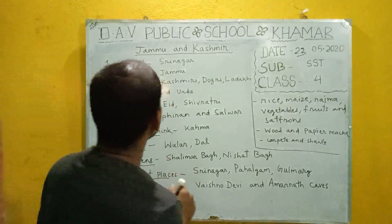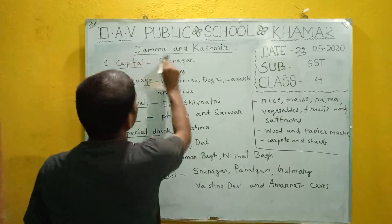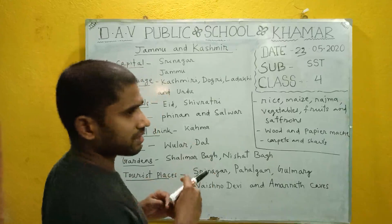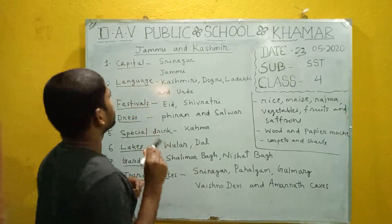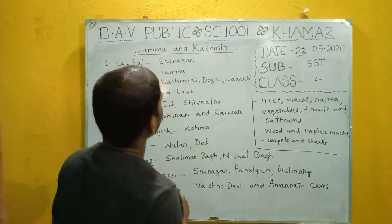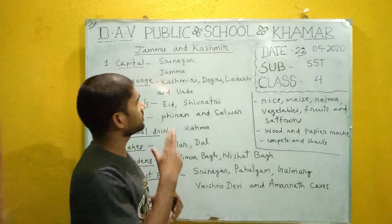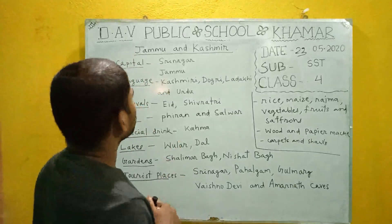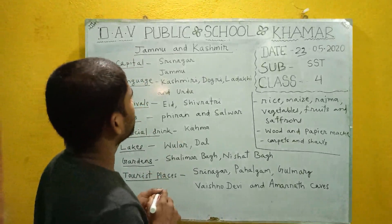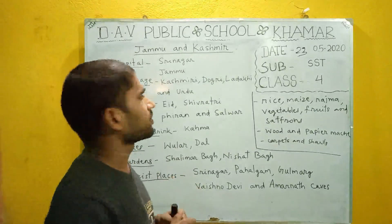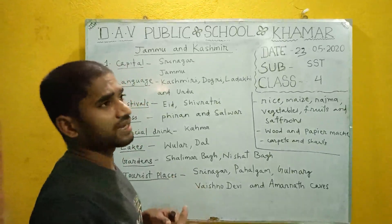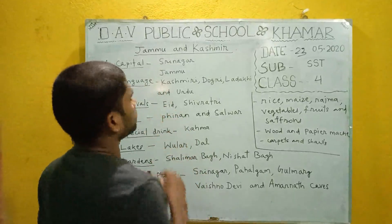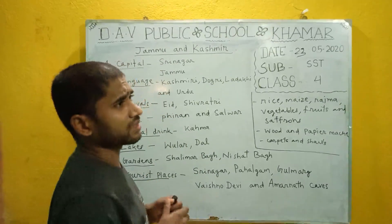Let us now discuss today's topic. We are going to know more about the different states that lie in the southern part of the Himalayas. The first one is Jammu and Kashmir. It is located in the northernmost part of India, and many great Mughal emperors called it the heaven on earth.